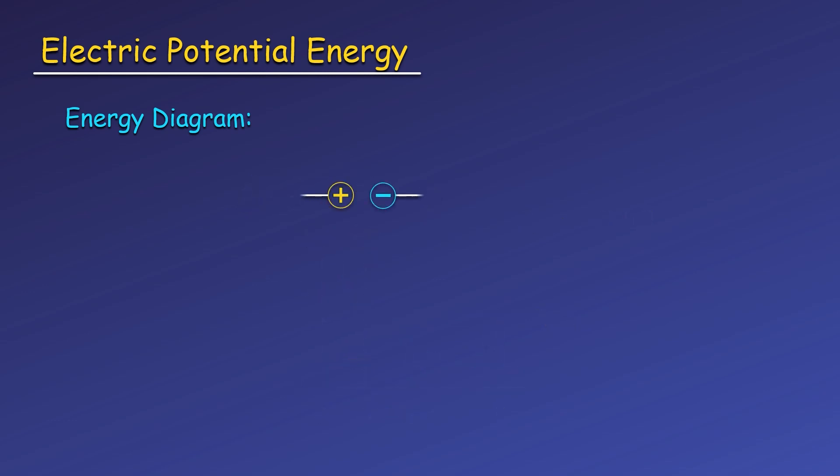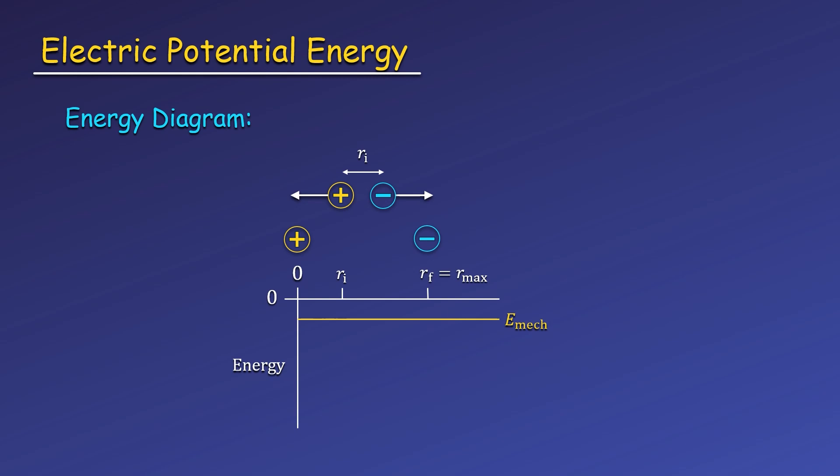We can also look at the energy diagram for unlike charges. In this case, we'll start with the two charges close together, and they will be launched away from each other. Again, they will attract each other, slowing down until they stop and turn around. This means there will be some maximum distance they'll reach before this happens. This point is when the charge's total mechanical energy is all potential energy. The maximum distance on this diagram and the minimum distance from our previous diagram are called turning points. Notice our function for the potential energy here looks just like the one between two like charges from the previous diagram, but it is reflected across the x-axis, because the potential energy is negative for opposite charges.